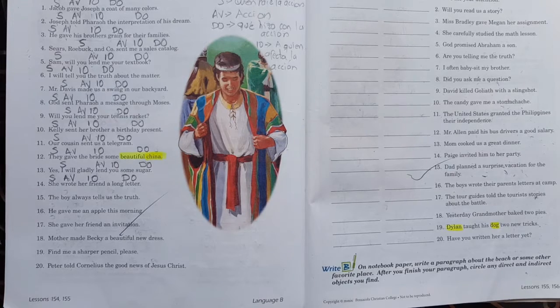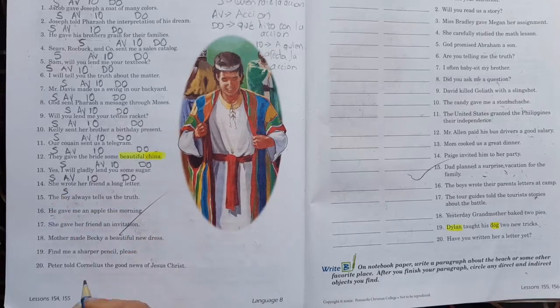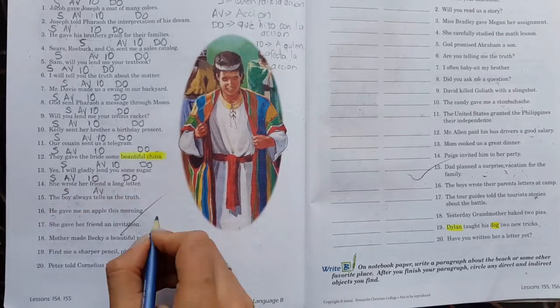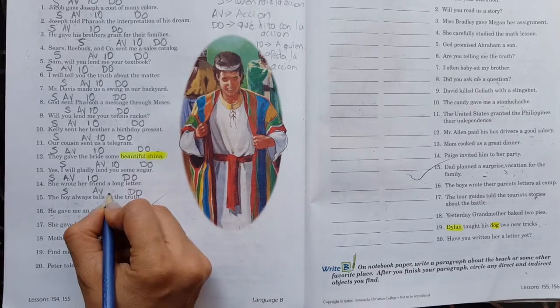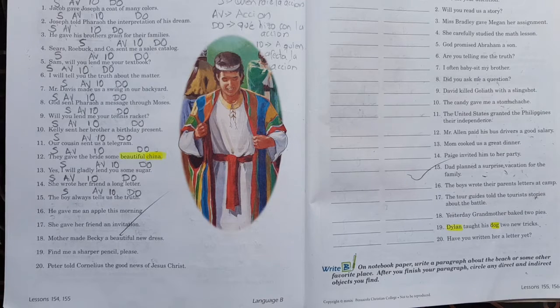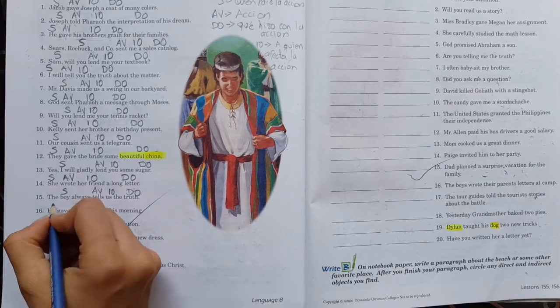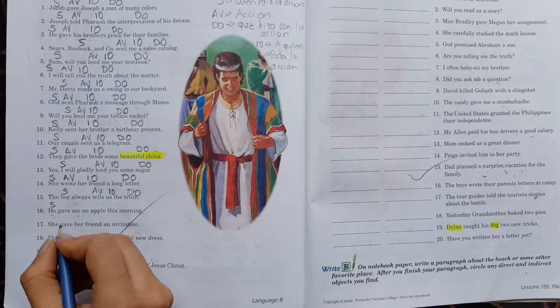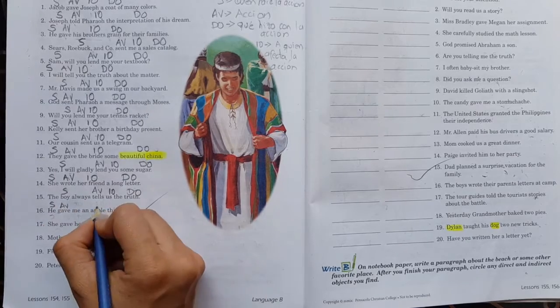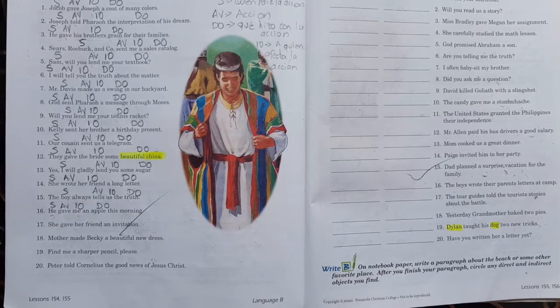Number thirteen. Yes. I will gladly lend you some sugar. Sí. Yo te enviaré azúcar. ¿A quién? Pues a ti. Very good. Next. Number fourteen. She wrote her friend a long letter. So, right here. Ella le envió a su amiga una larga carta. Ella, ¿qué hizo? Escribió. ¿Qué escribió? Pues una carta. ¿Y a quién se la escribió? A su amiga.